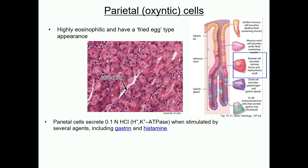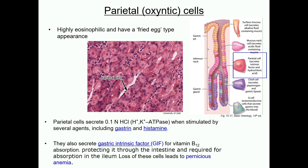Importantly, parietal cells also secrete intrinsic factor, which functions to protect vitamin B12 as it passes through the small intestine, allowing it to be absorbed in the ileum. Loss of these cells can lead to pernicious anemia.